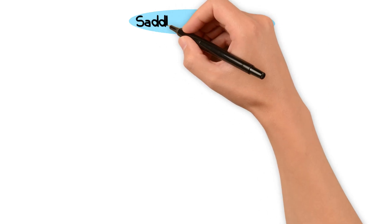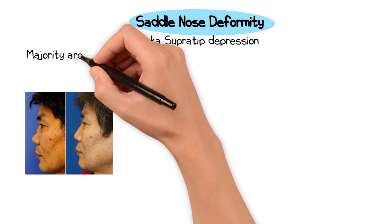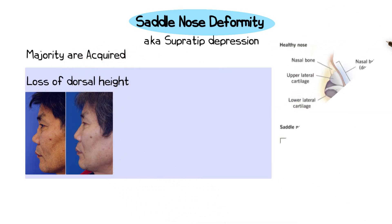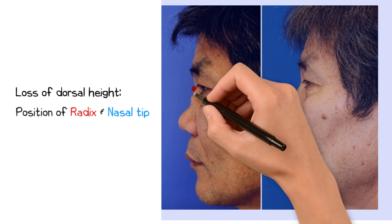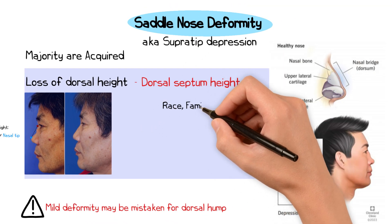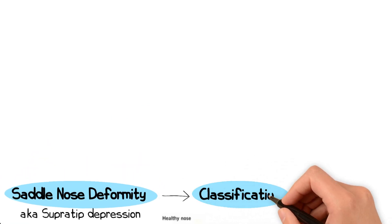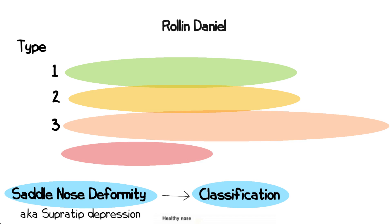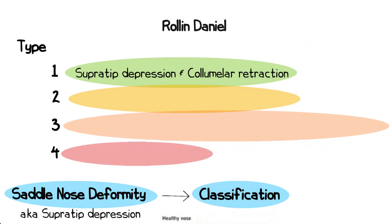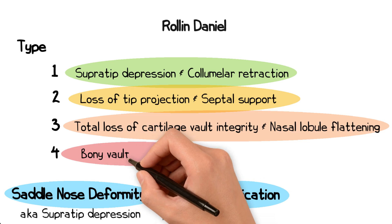What are the common causes of a saddle nose deformity? A saddle nose is otherwise referred to as a supratip depression. For the majority of patients, this is an acquired condition characterised by the loss of dorsal height. A milder saddle nose can often be mistaken for a dorsal hump, so it is important to look at the position of the radix, the nasal tip, and the height of the dorsal septum first. One commonly used classification, by Roland Daniel in 2006, divides a saddle nose deformity into four subtypes: Type 1 has a supratip depression with columella retraction; Type 2 shows more advanced loss of tip projection and septal support; Type 3 has loss of total cartilage vault integrity with flattening of the nasal lobule; and Type 4 shows progression with involvement of the bony vault.